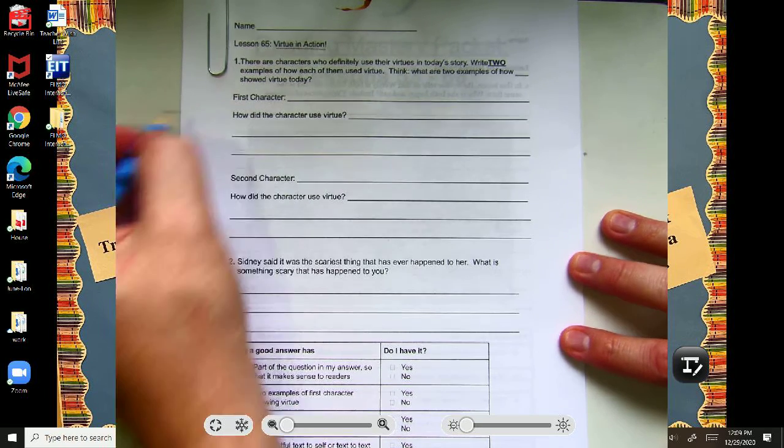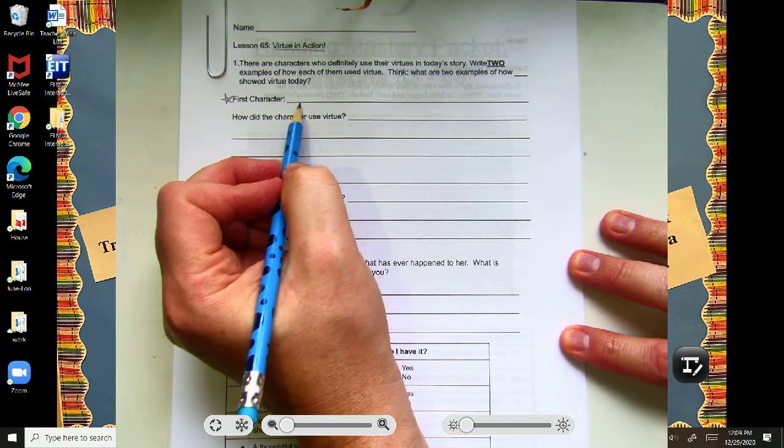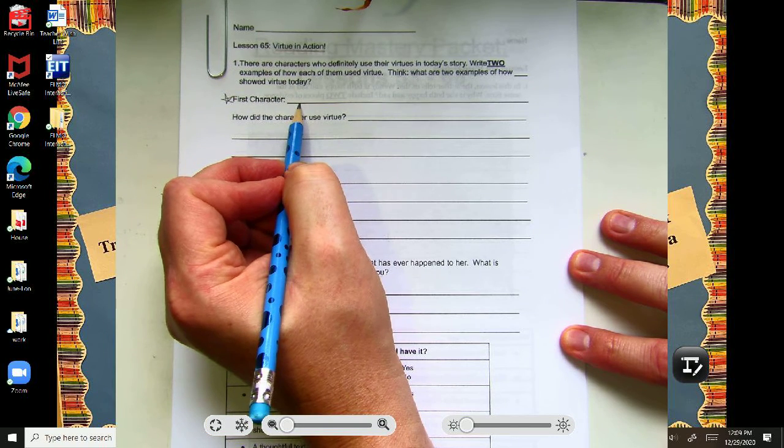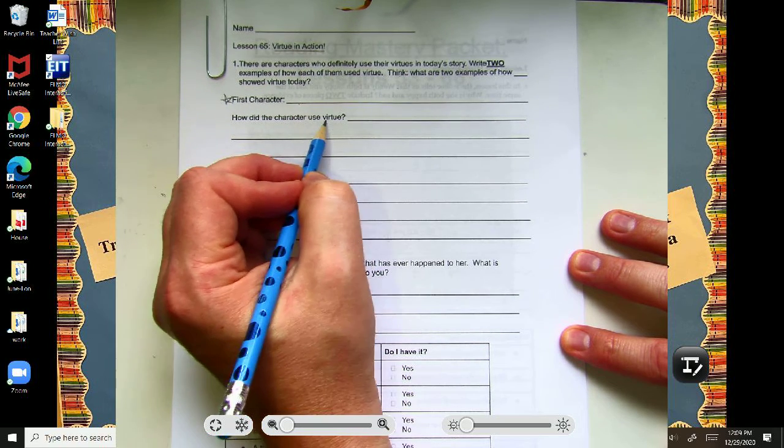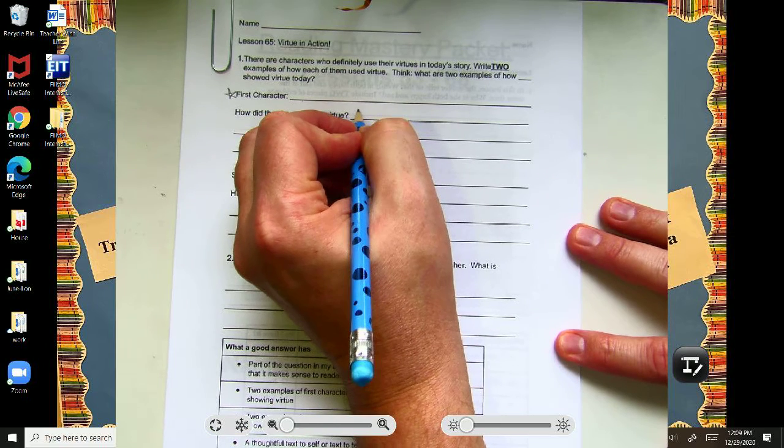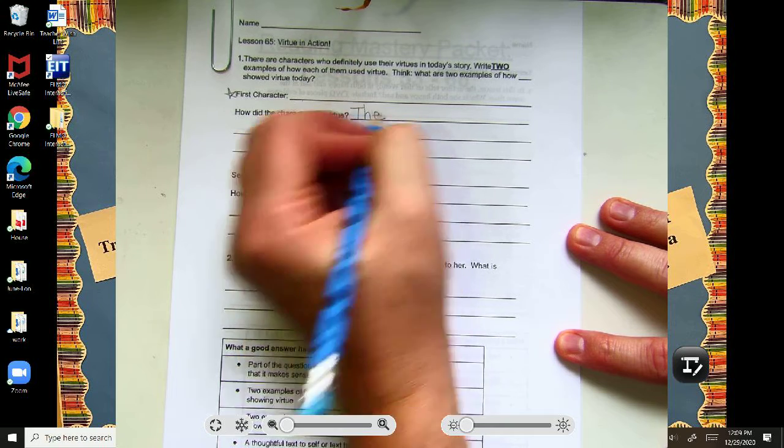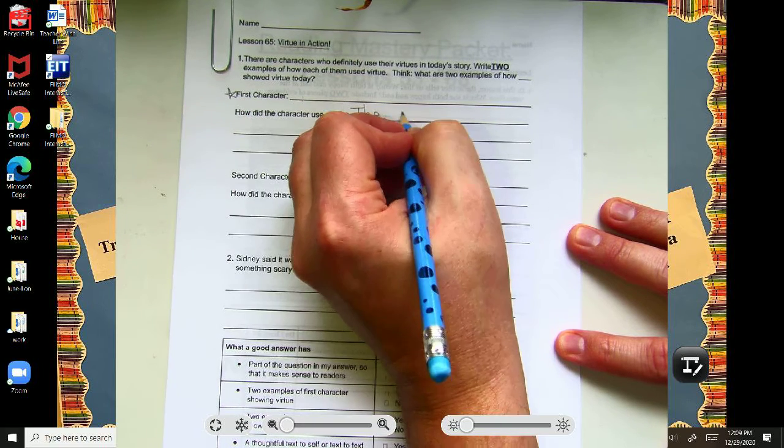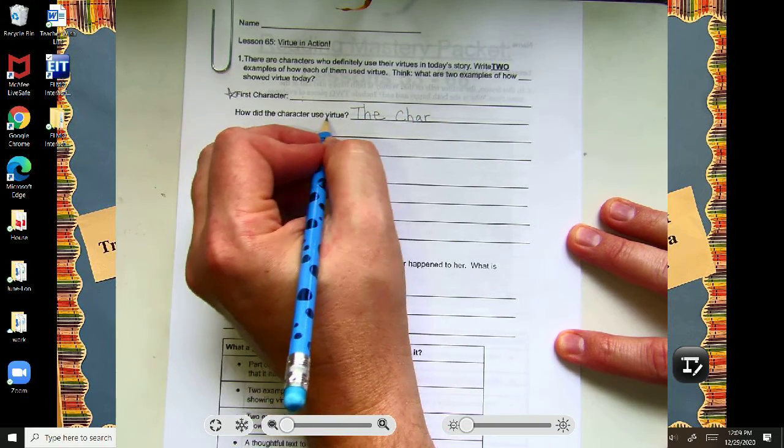So scholars, you're going to need to think of a first character, a character in today's story, and then how did the character use virtue? You're going to have to decide on your first character, but a way to start your answer, and then the second part, how did the character use virtue?